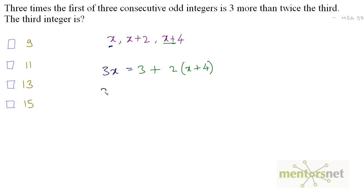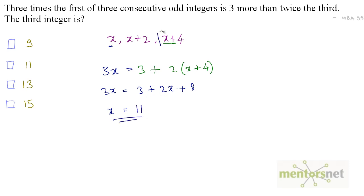So 3x equals 3 plus 2x plus 8. Moving 2x to the left-hand side, we can solve for x and find the third integer.